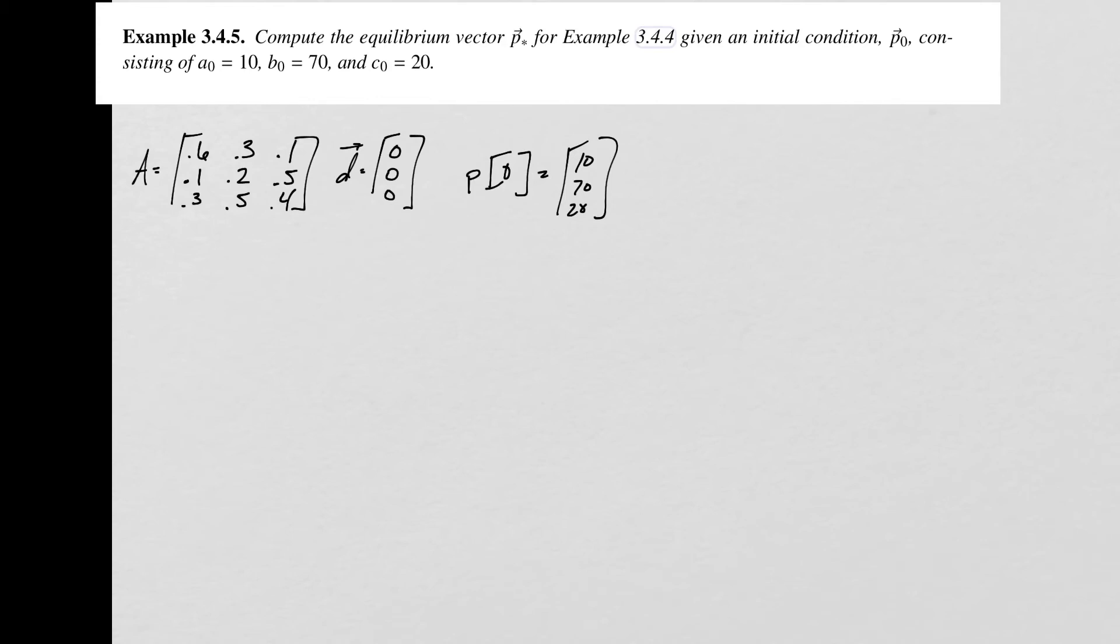What I want to point out is we've already solved for the equilibrium vector and found there were infinitely many. Here's what we have going on: if you look at each one of these columns, each column sums to 1, and then we have nothing being added to the system because this D vector is 0. What this means is that there's never going to be any gain or loss to the system. What starts in the system will remain in the system forever because none of it's leaving, there's no more coming in from an outside source. We started with 100 people in the system. There will always be 100 people in the system, since all these columns sum to 1 and D is 0.